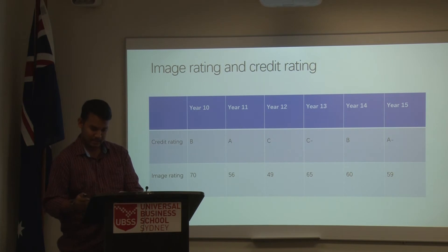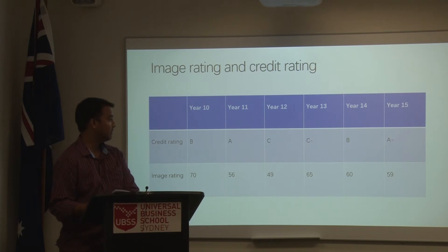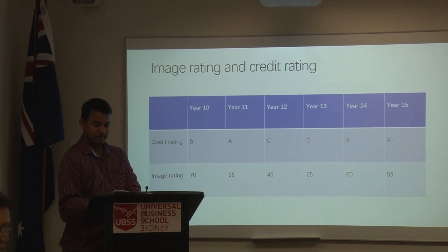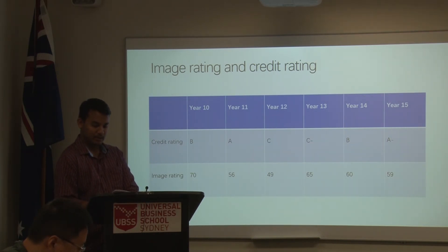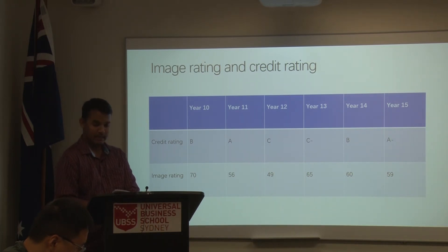Coming on to the image rating and credit rating — in year 10 we gained a credit rating of B. It went down in year 13 and ended up with an A minus credit rating in year 15. Image rating also started with 70 in year 10 and ended up with 59 in year 15.